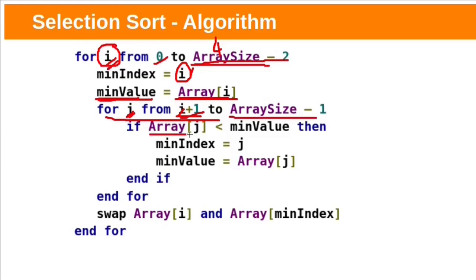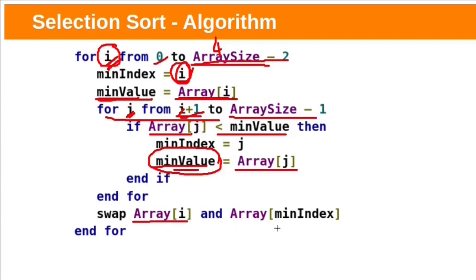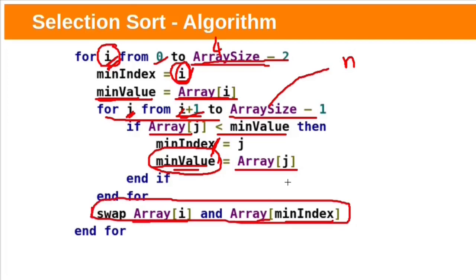If the element at index j is smaller than the current minimum, make the element at index j the current minimum. After scanning the entire unsorted subarray, we will have found the smallest element. The first element of the unsorted subarray is at the i-th index in the i-th pass, so swap the element at the i-th index with the minimum value — or more precisely, with the element at the minimum index, where we are also tracking the minimum index. If the array size is n, in each pass only one swap will be performed, so the total number of swaps in selection sort in the worst case is n minus 1.